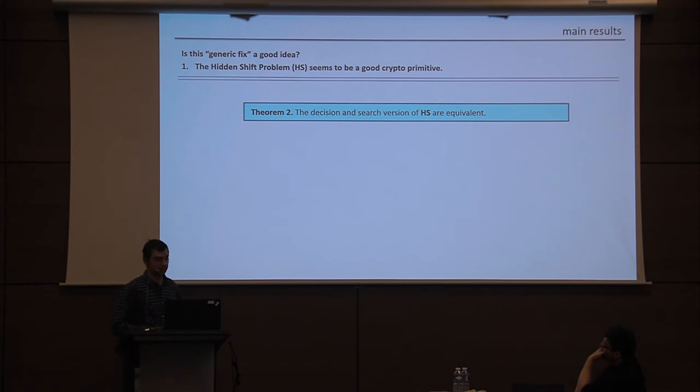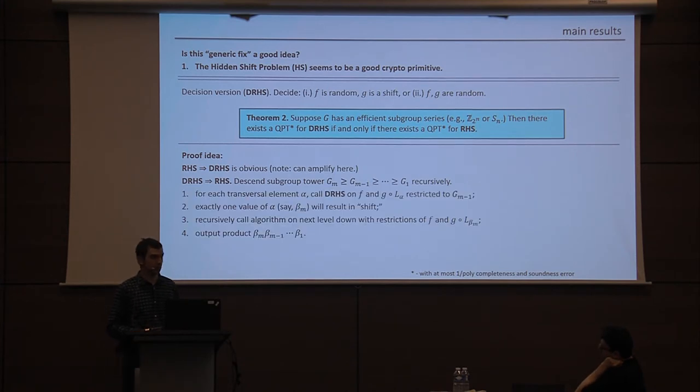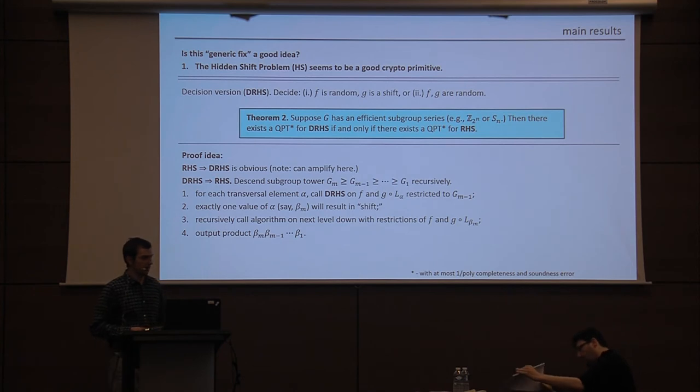The other reason to think that it's a good crypto primitive is that in most cases the decision and search version turns out to be equivalent, as we were also able to show this. So the proof idea, in one direction it's obvious, in the other direction you have to work a little more. So basically, we need some additional condition on the group. We need that it has this efficient subgroup series, but this is true for most groups of interest. And then basically we can do an iterative, or recursive rather, algorithm that descends down the subgroup tower. And it has to do a little work. It has to work through the transversal, adjusting these shifts as it goes, and calling the decisional algorithm on each transversal element and on each level of the tower. And then eventually you can build the entire shift. So I should have said what I mean by the decisional version of the problem. I just mean that you decide between these two cases. So I give you two functions and I promise either both of them are random, or one is random and the other is a shift.